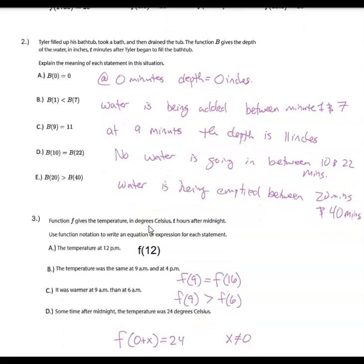On this one, the function gives the depth of water in a bathtub after a certain number of minutes. The first statement means there is no water at zero minutes. The next means after seven minutes there's more water than after one minute. At nine minutes there is a depth of 11 inches. The depth at 10 minutes is the same as at 22 minutes. The depth at 20 minutes is greater than the depth at 40 minutes. So it seems the tub started filling, was kept at a level for a while, and then drained.